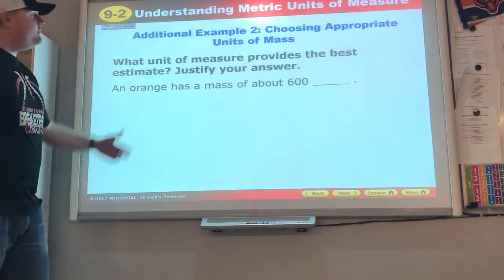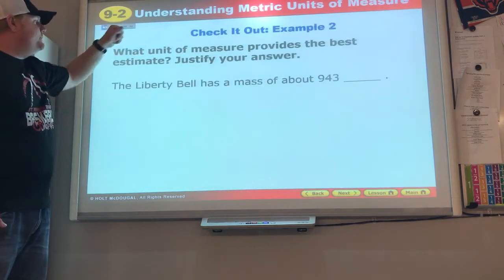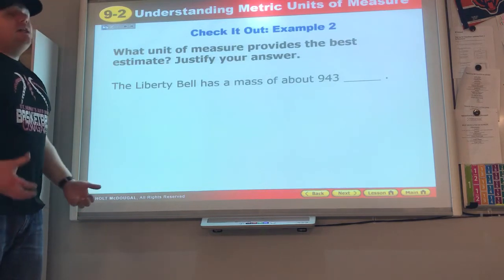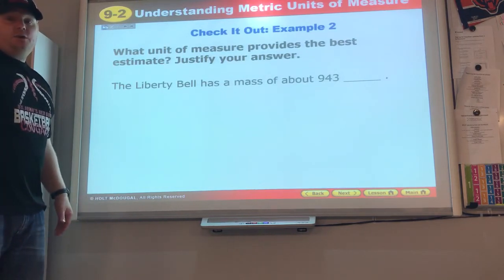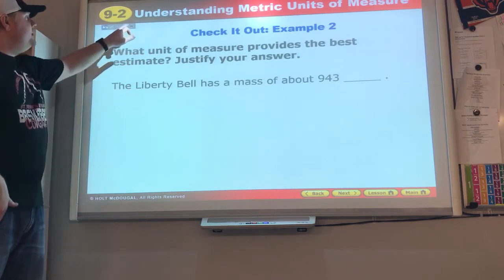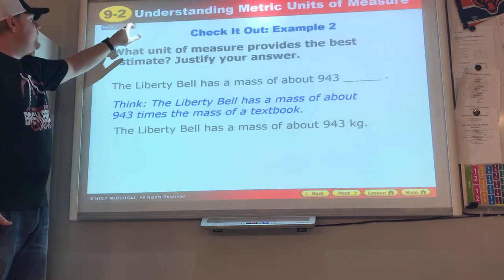A kilogram is about a textbook. The orange has a mass of about 600 - I'd say 600 paper clips, wouldn't you? So 600 grams. The Liberty Bell has a mass of about 943. That thing is massive - it's about half as tall as I am or a little bit more, maybe about three to five feet tall. So I'm thinking kilograms for that one, the mass of a bunch of textbooks.